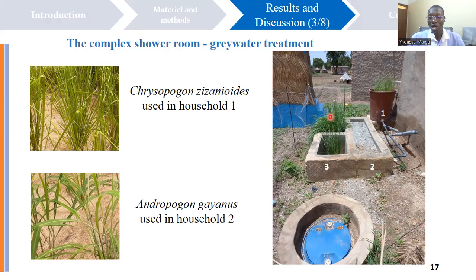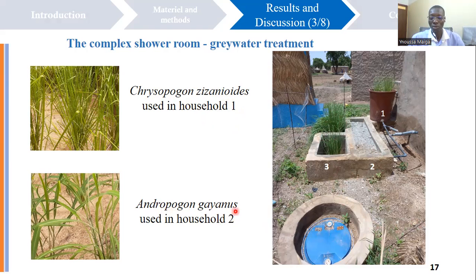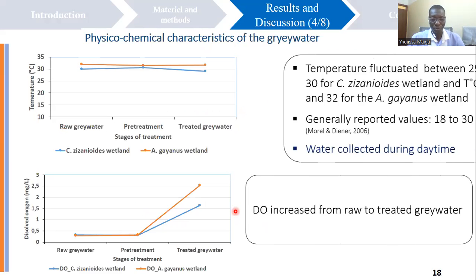We constructed the system in two different households. In the first one, Chrysopogon zizanioides is used as a plant. And in the second household, the plant used was Andropogon gayanus.